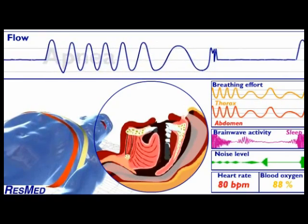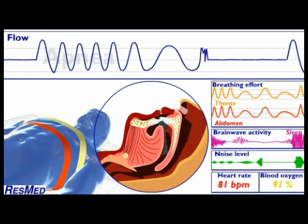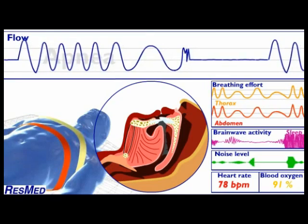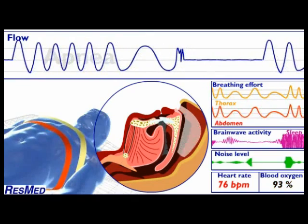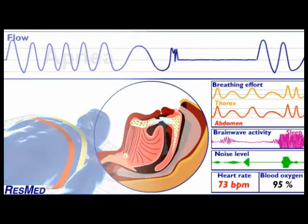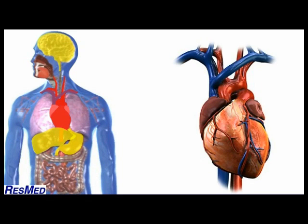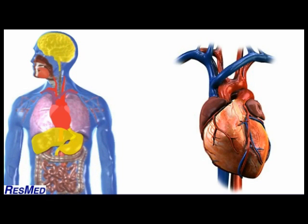These disturbances can keep your partner awake. Apnea-arousal cycles produce significant stresses to your body. As you have seen, apneas cause depletion of oxygen supply to vital organs including the brain, and arousals literally jolt the cardiovascular system.